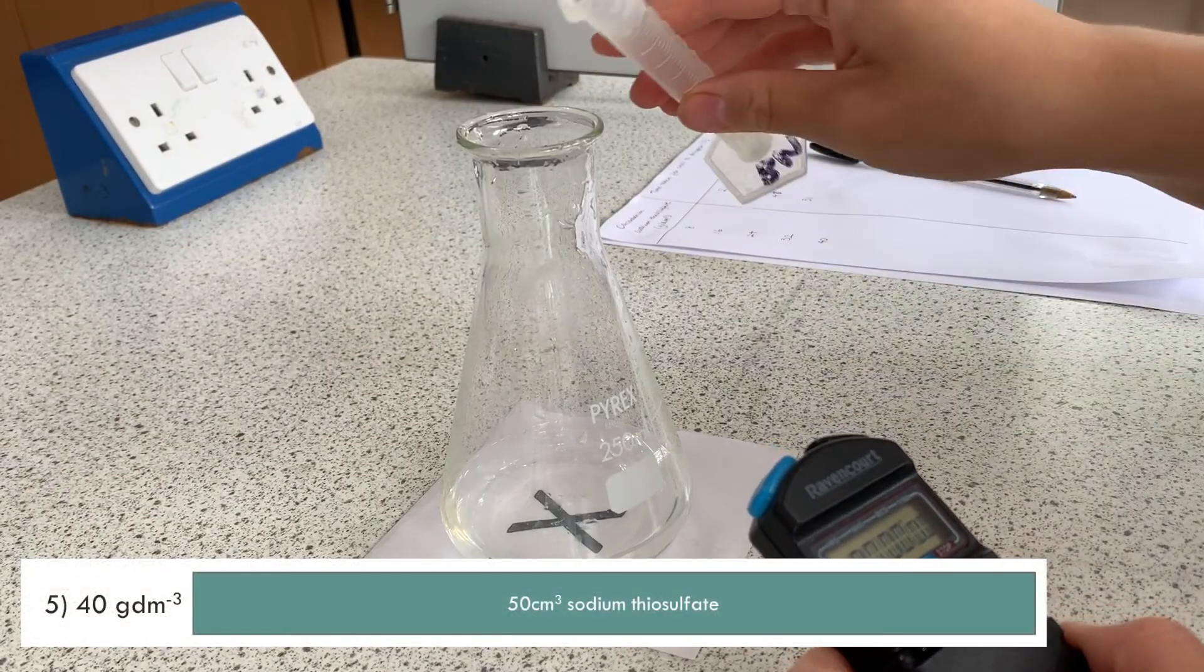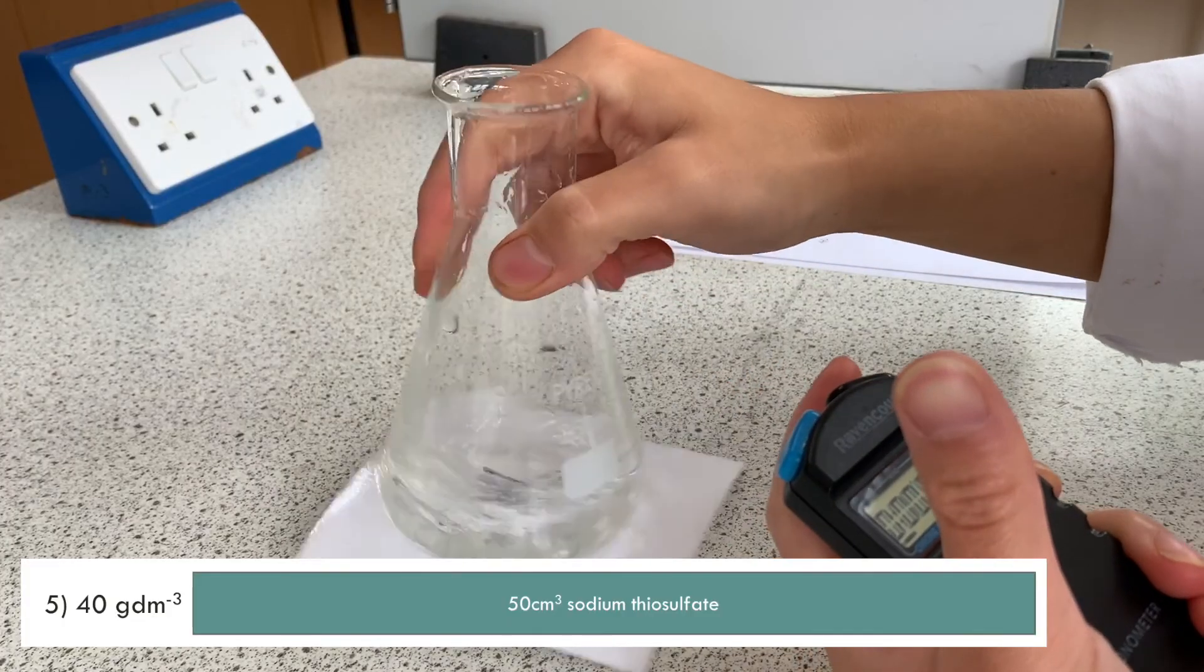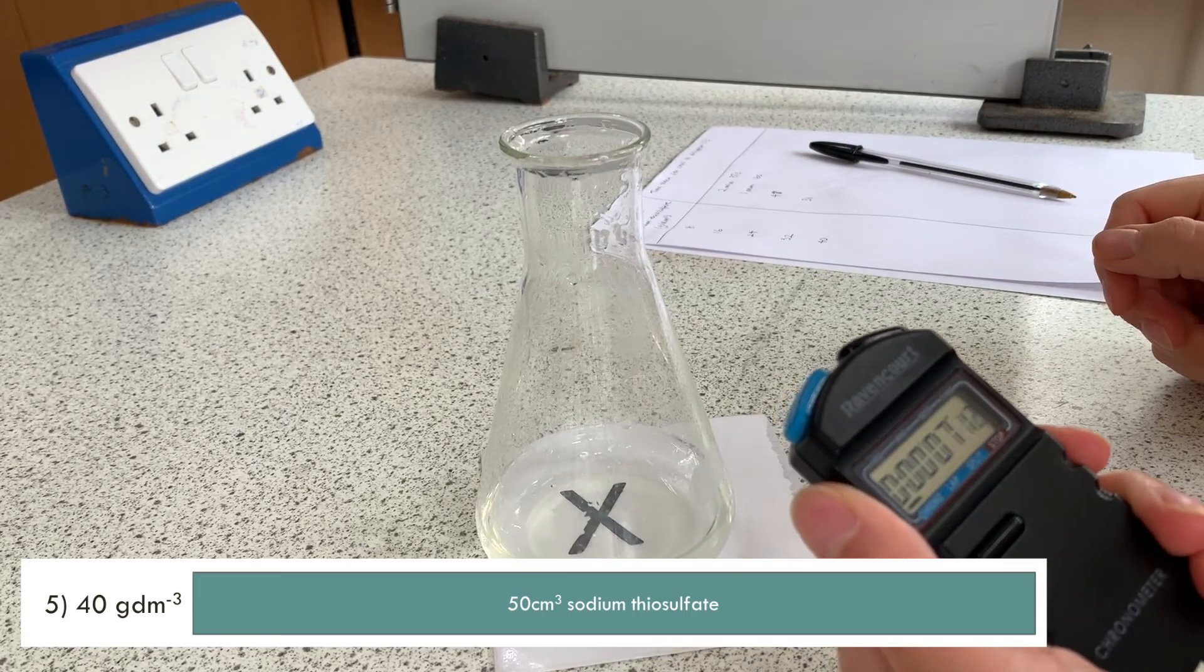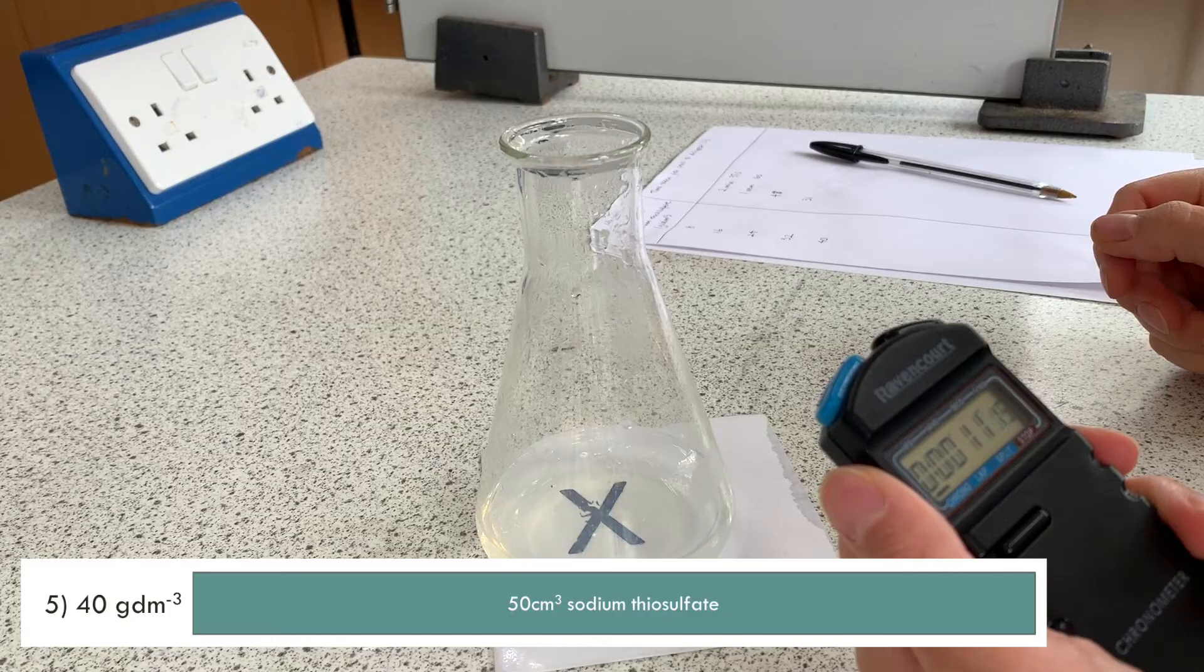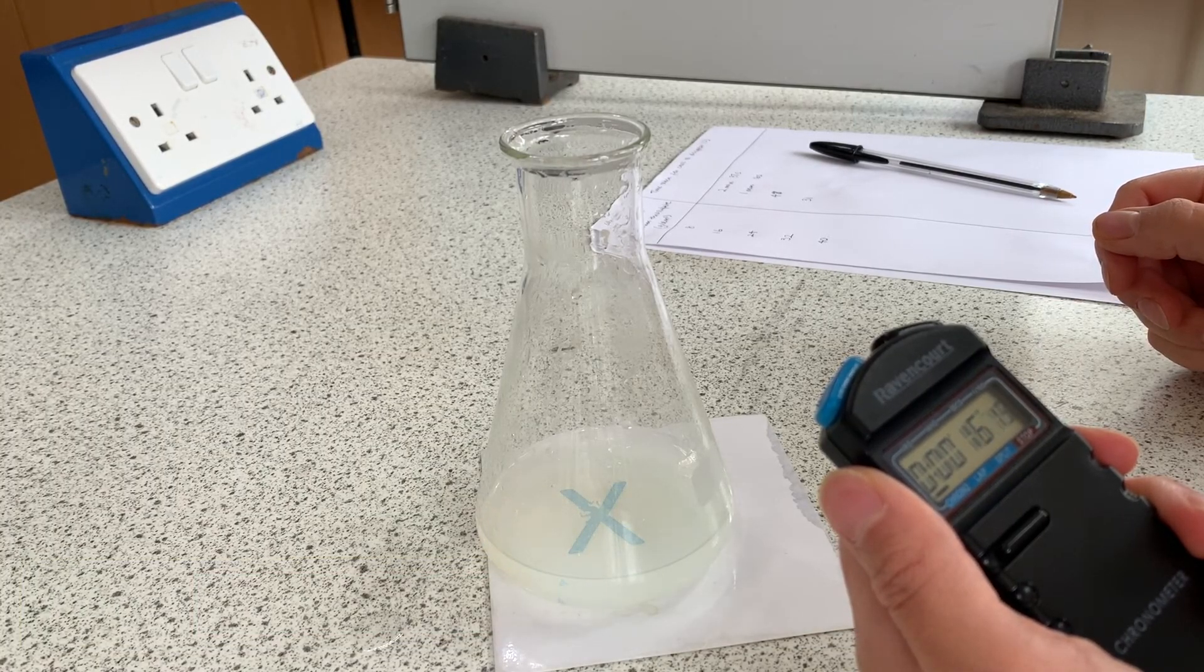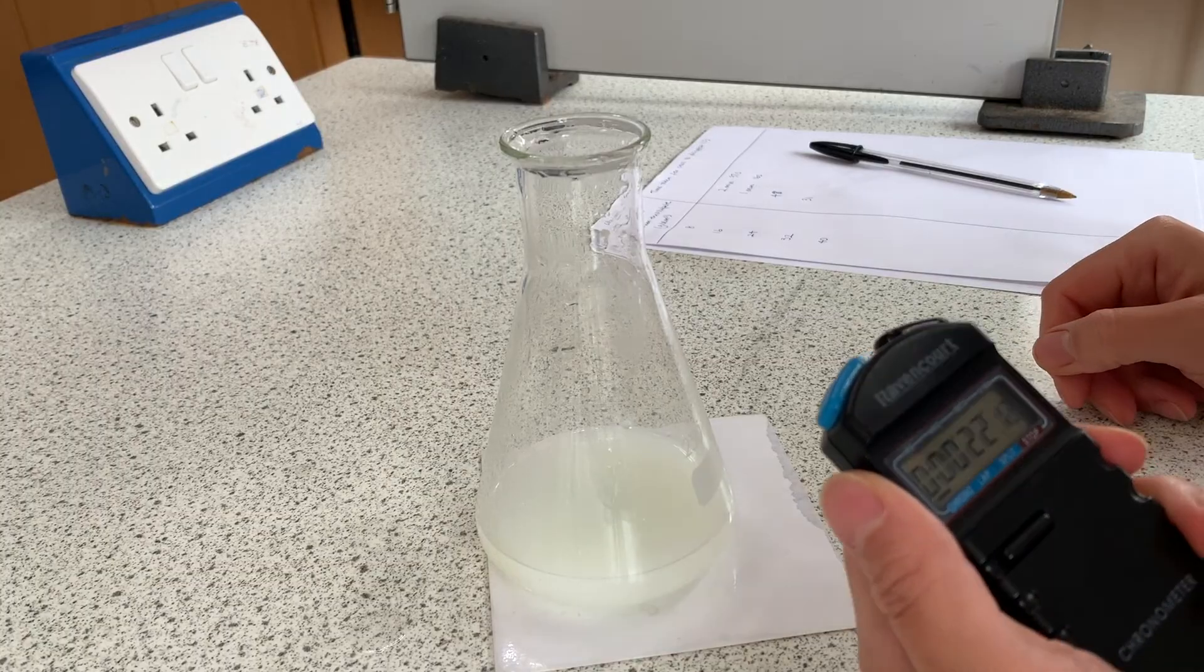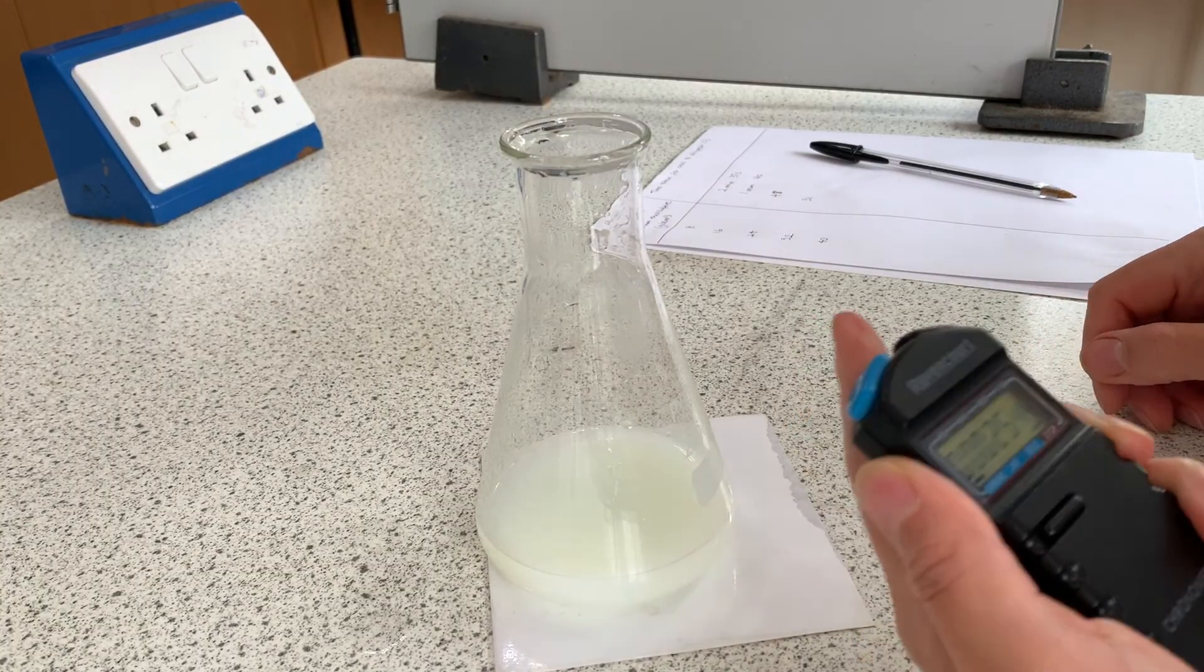And finally the reaction with the 40 grams per decimetre cubed solution. This is the original concentration of the sodium thiosulfate that I've previously diluted, so this time I don't need any distilled water. It's just the 50 centimetres cubed of sodium thiosulfate. Add 10 centimetres cubed hydrochloric acid, swirl the mixture, and start the stopwatch. This time I haven't sped up the video. You can see this reaction completes much faster as it's the most concentrated sodium thiosulfate solution.